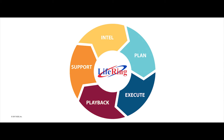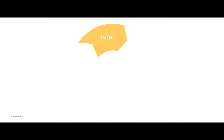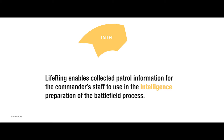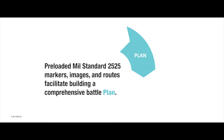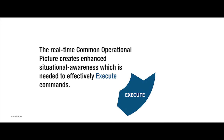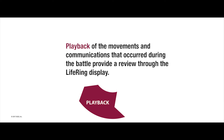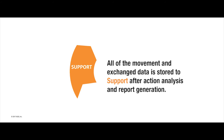LifeRing was designed to meet the cycle of military operations. LifeRing enables collected patrol information for the commander's staff to use in the intelligence preparation of the battlefield process. Pre-loaded MIL-STANDARD 2525 markers, images, and routes facilitate building a comprehensive battle plan. The real-time common operational picture creates enhanced situational awareness, which is needed to effectively execute commands. Playback of the movements and communications that occurred during the battle provide a review through the LifeRing display. All of the movement and exchanged data is stored to support after-action analysis and report generation.